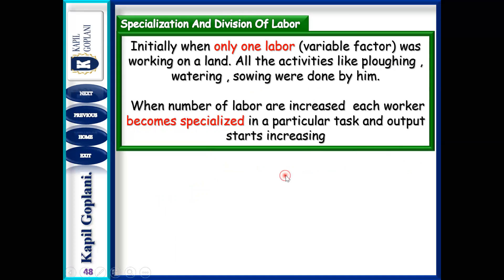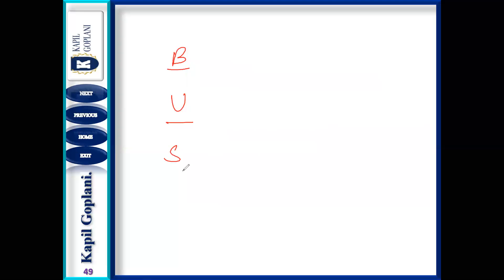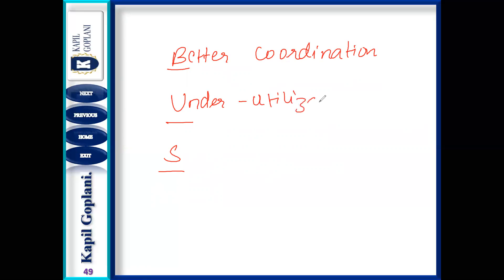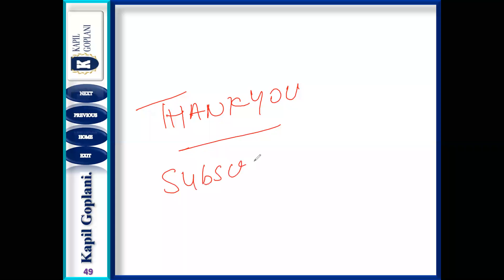So this was today's topic — we have understood the reasons for increasing return to a factor. To remember them, use the mnemonic BUS: B for Better coordination, U for Under-utilization of fixed factor, and S for Specialization and division of labor. We are ending today's session. Thank you students for listening to today's lecture. Do subscribe to my channel and hit the bell icon for further updates. See you then.